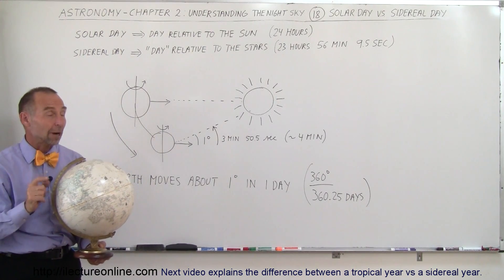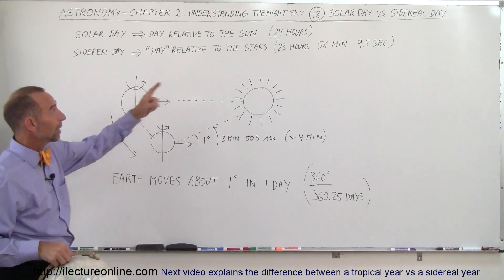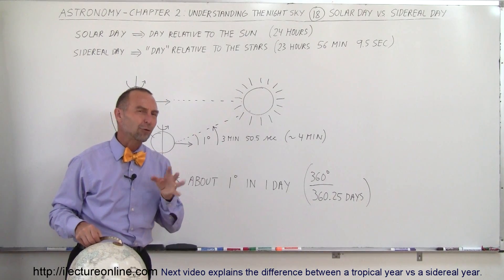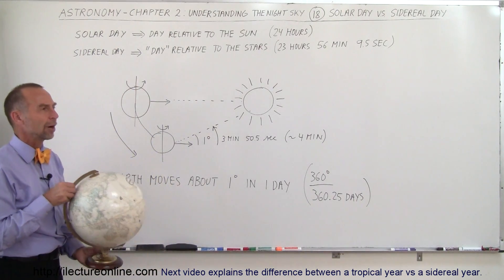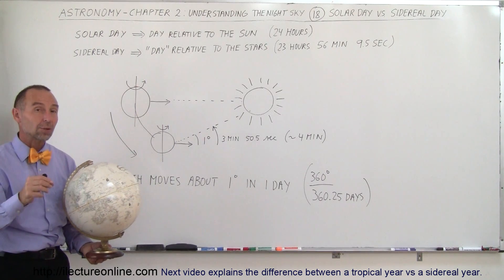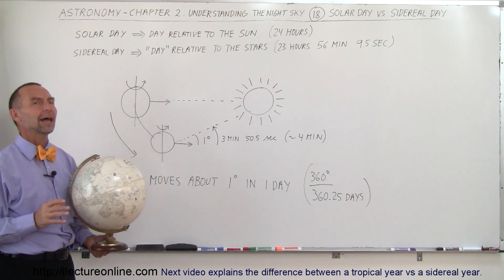not every 24 hours, but actually every 23 hours, 56 minutes, and about 9.5 seconds. So it's about four minutes short of a 24-hour day. The Earth will make one complete rotation every 23 hours, 56 minutes, and 9.5 seconds.